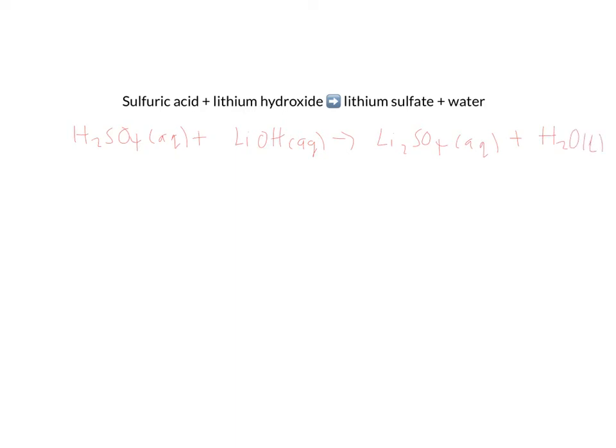And then finally, we have water, which we know is a liquid. So we're going to need to balance this, because we have got two lithium atoms here, but only one there, two hydrogens, three hydrogens, but only two over here. So we will do that by needing two of these, and therefore making two of those. I will just give you a moment to have a little check to see that that is right.